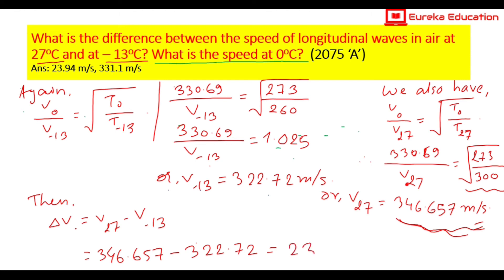This is the answer to the question. For 0 degrees C, the answer in the book is 331, and we calculated 330.69, which is almost similar and the same. So this is the answer. Thank you so much for watching this video.